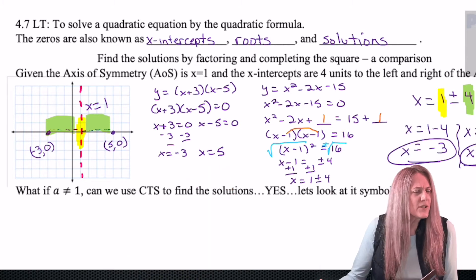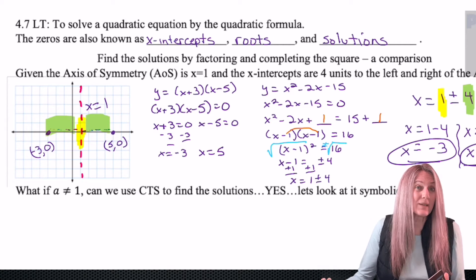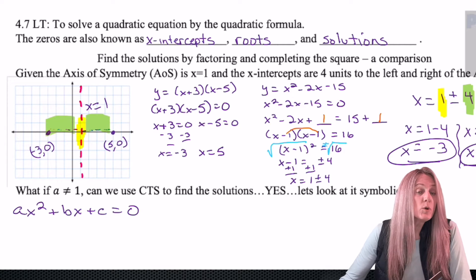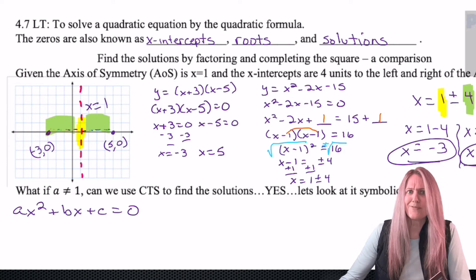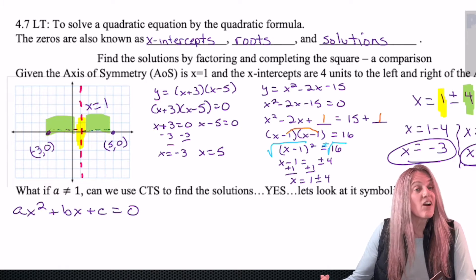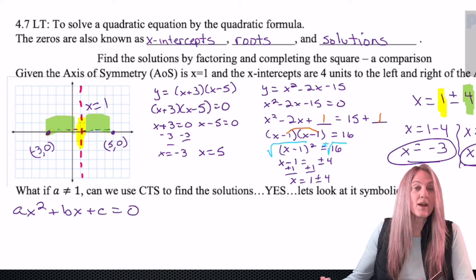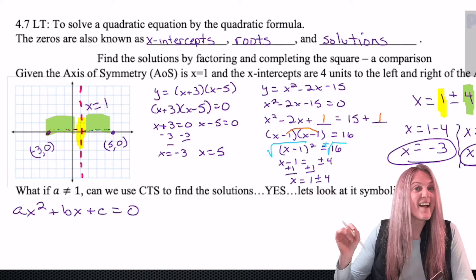Now let's talk about what happens when a isn't 1 and it's not convenient to divide out the a like we did in our last lesson. So this will work for all standard form equations whether a is 1 or negative 3 or 17. Remember a, b, and c are constants so they are values.